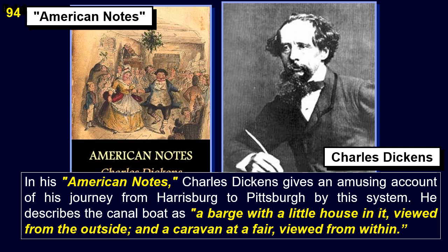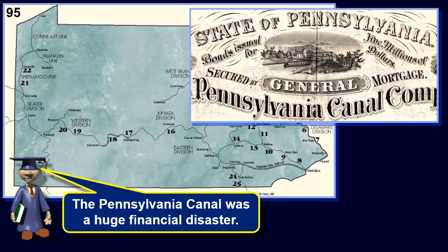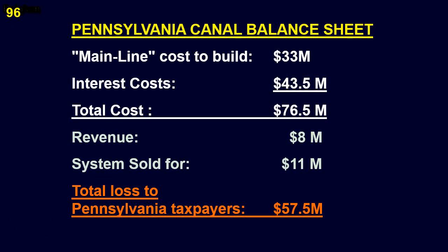Dickens describes the canal boat as a barge with a little house in it, viewed from the outside, and a caravan at a fair, viewed from within. Unlike the Erie Canal, the Pennsylvania Canal was a huge financial disaster. The main line cost about $33 million to build with interest costs of $43.5 million, for a total of $76.5 million. Revenue was only $8 million, and the entire system was eventually sold for $11 million, making the total loss to Pennsylvania taxpayers $57.5 million.